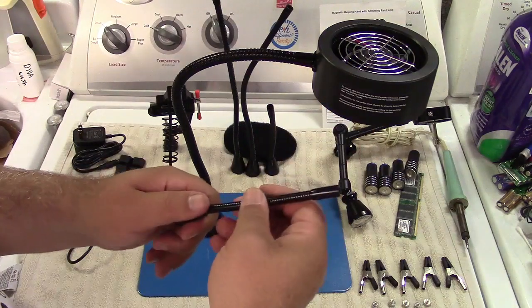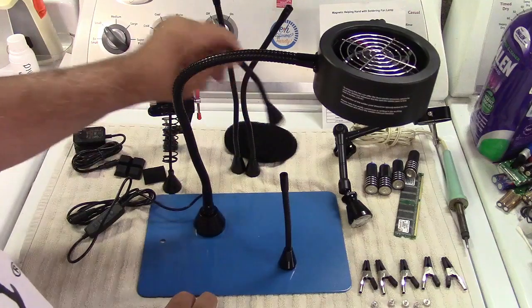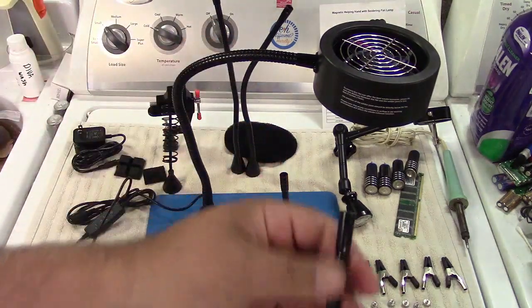These are goosenecks over here, once again magnetic. And these are for the alligator clips.